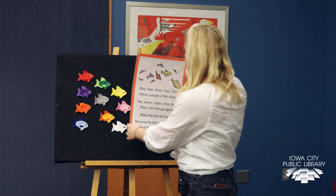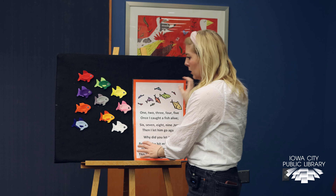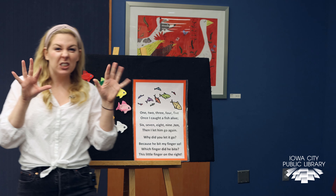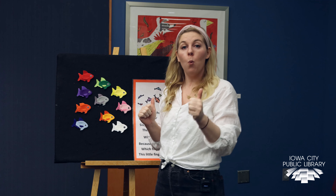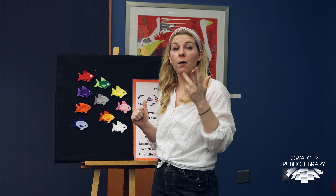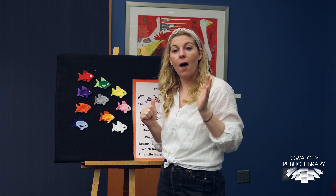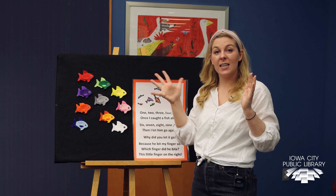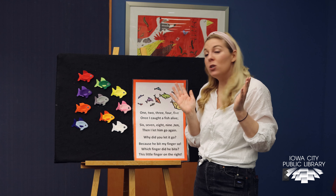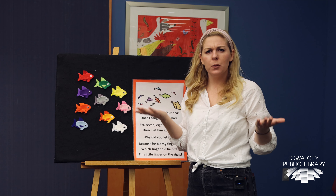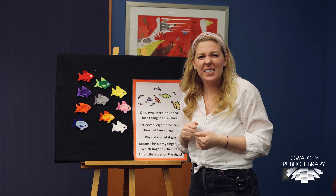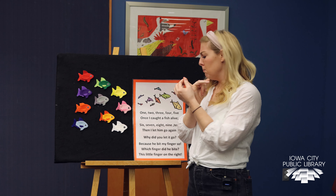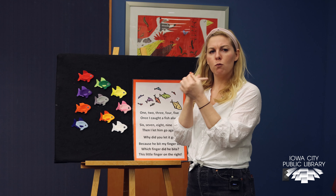Perfect. All right. So this is kind of a fun one that we can do. Show me your 10 fingers. Here we go. One, two, three, four, five — once I caught a fish alive. Six, seven, eight, nine, ten — then I let him go again. Why did you let him go? Because he bit my finger so. Which finger did he bite? My little finger on the right.